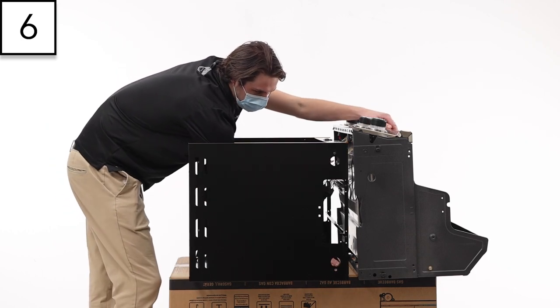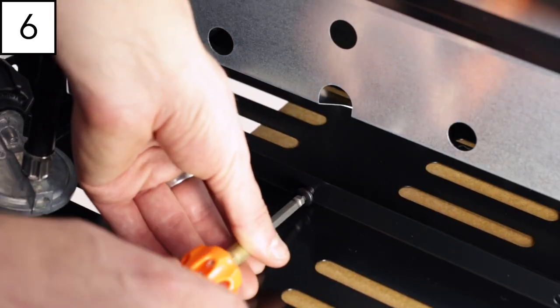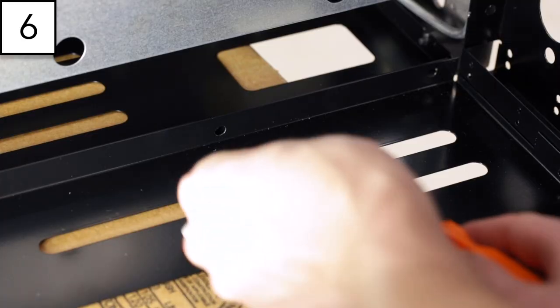Line up the holes on the cabinet with the bottom of the cook box and secure using the six screws. Start with the rear panel then secure the side panels.